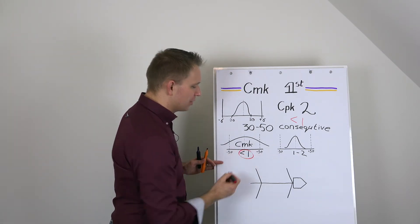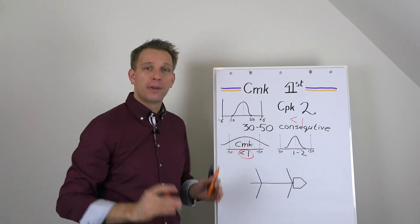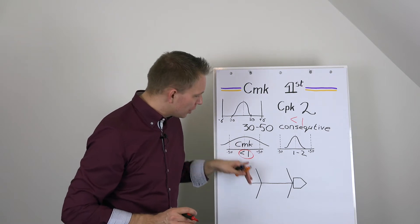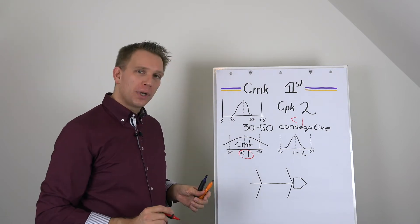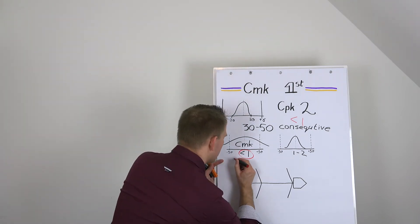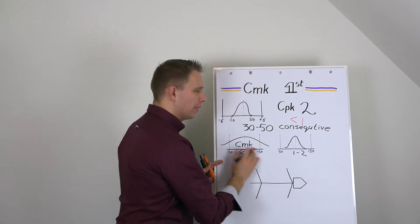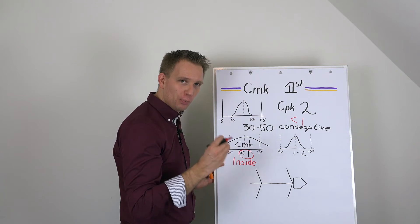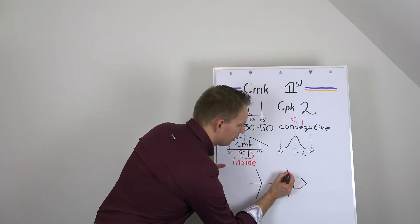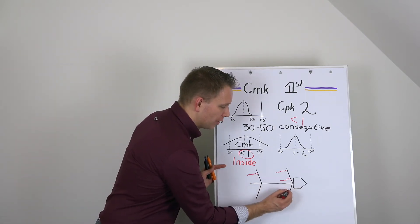If you have your CMK, so machine capability of your 30 to 50 consecutive samples, you are going to go into a really inside focused way of then attacking the problem. We are looking for deviation sources that are really inside the small process.